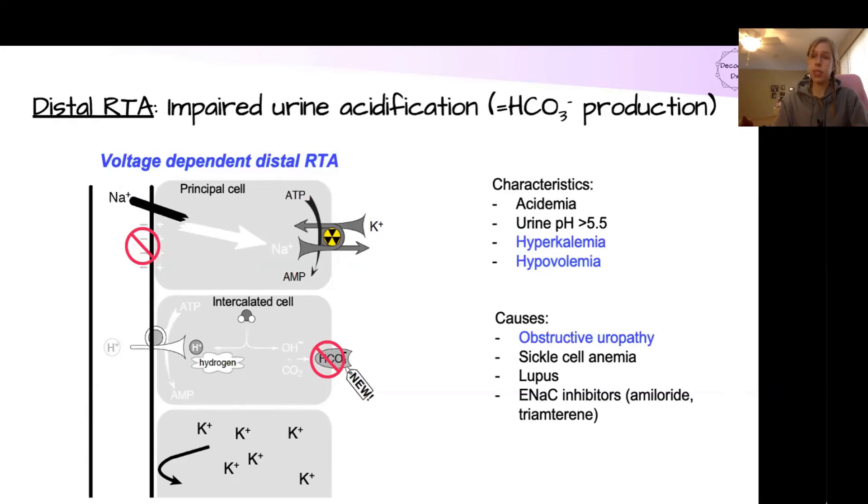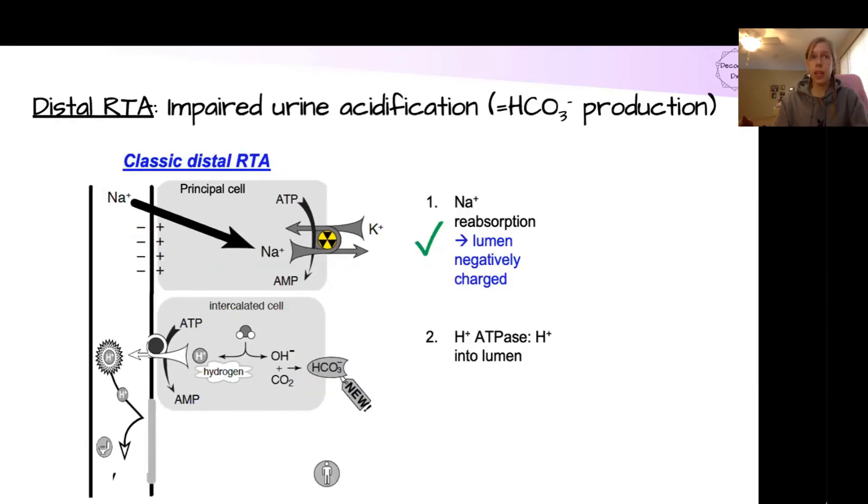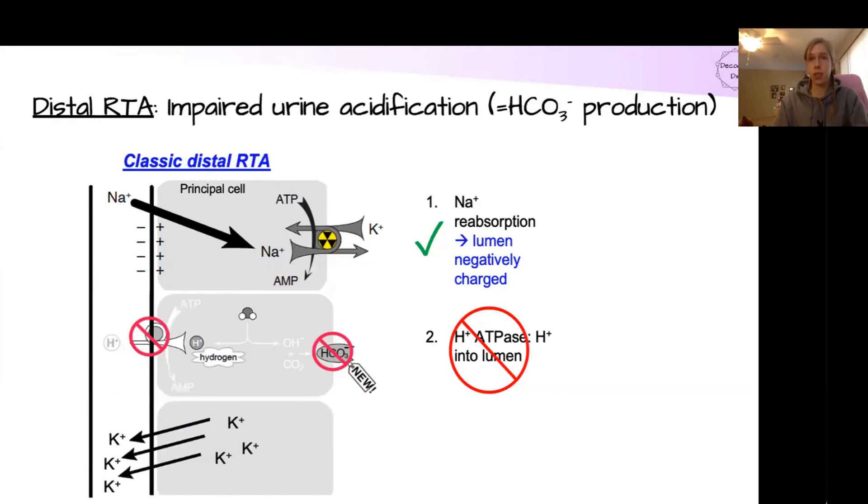But what if that sodium resorption is still intact? Well, then we can get a classical distal RTA. This happens when the sodium resorption is happening. So we still have that negative lumen charge, but there's something wrong with the hydrogen ATPase pumping that hydrogen into the lumen. We already talked about how this is directly related to the bicarbonate production. So we're going to get an impaired amount of new bicarbs to replace that daily acid load. But because the sodium is reabsorbed in the principal cell, we do have the electrical gradient, which will attract the potassium into the lumen, leading to a potential hypokalemia.